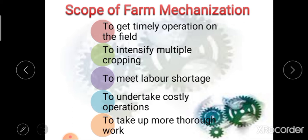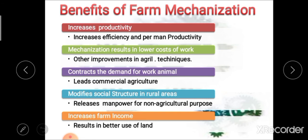After the scope of farm mechanization, the next point is the benefits of farm mechanization. Farm mechanization can be advantageous to the farmer from different points of view. The first benefit is that it increases production — mechanization increases the speed and rapidity of work with which farming operations can be performed, which ultimately leads to an increase in production. The second advantage is that it increases efficiency and labor productivity — mechanization increases the efficiency of labor in agriculture and raises agricultural production per worker.